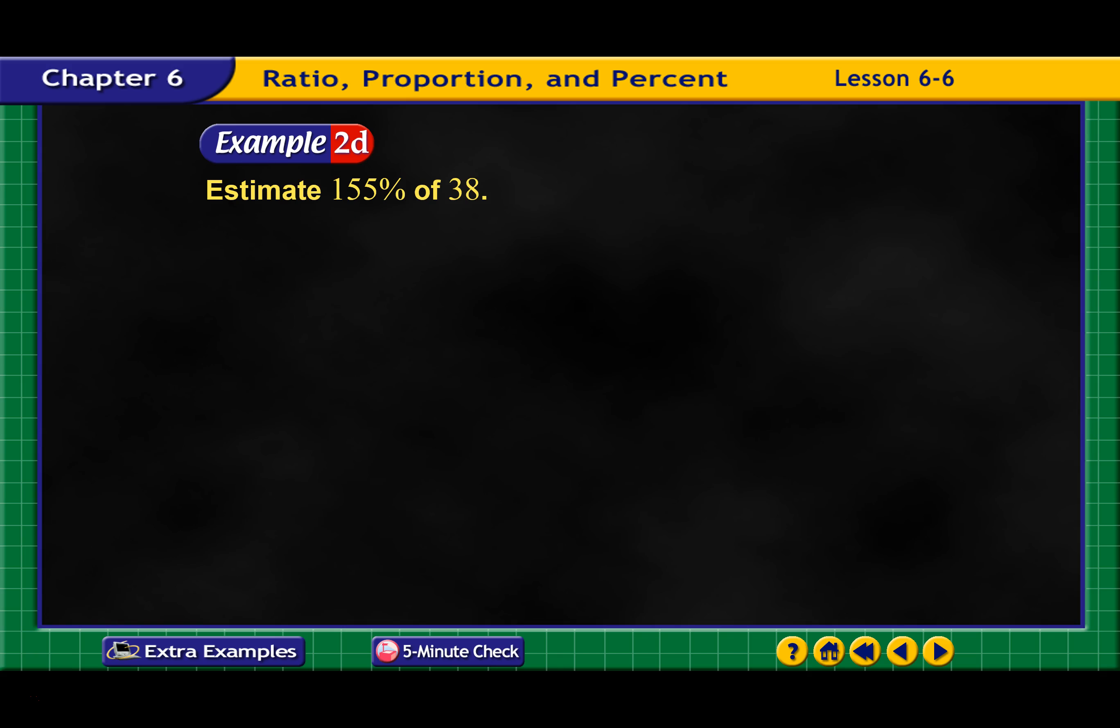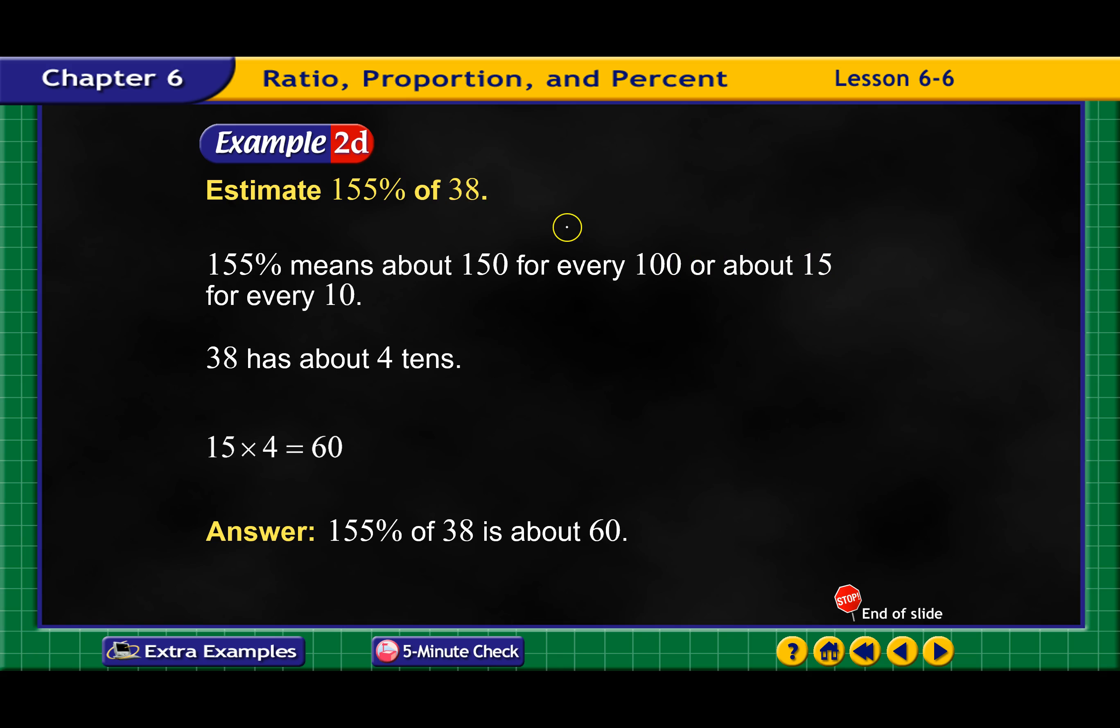155% of 38. So 155% is about 150 for every 100, or about 15 for every 10. 38 is about 4 tens, so 15 times 4 is 60. So 155% of 38 is about 60. Yeah, that works. So 15 for every 10. If this is 4 tens, it'll be 60. That's where the 15 comes from.